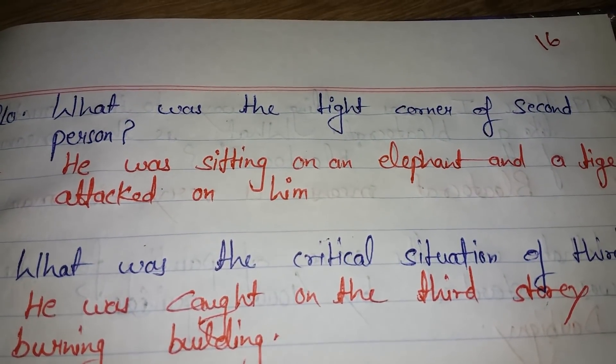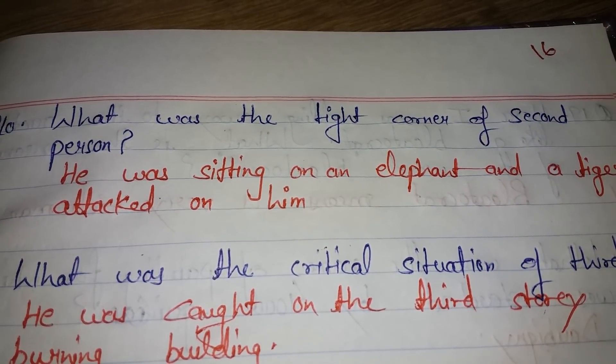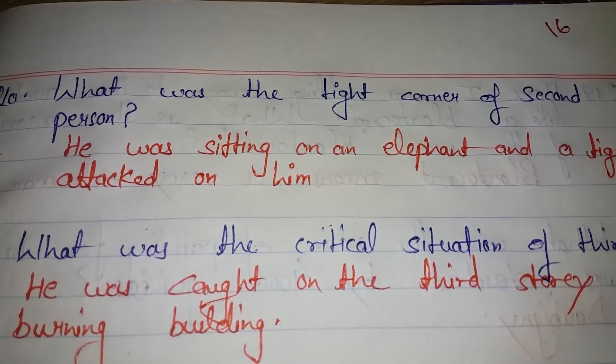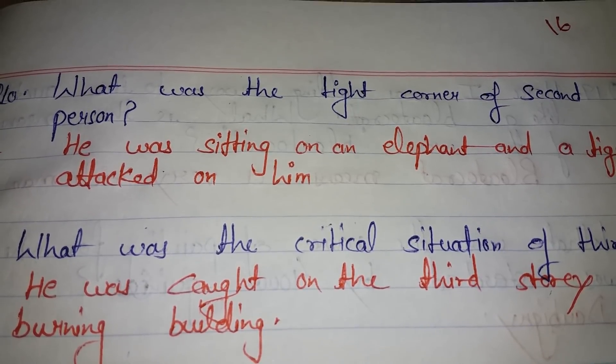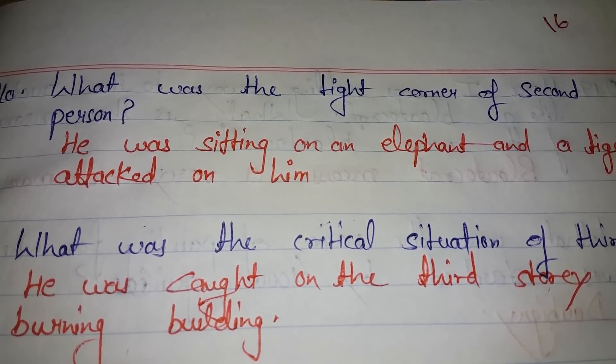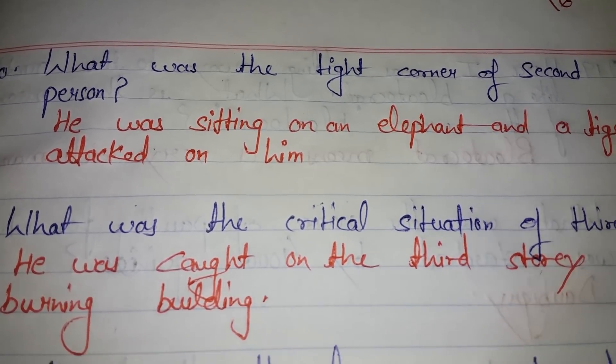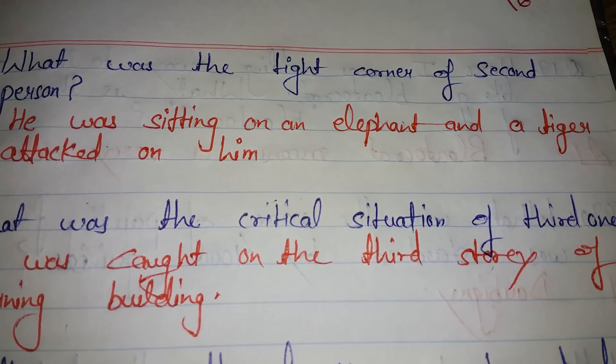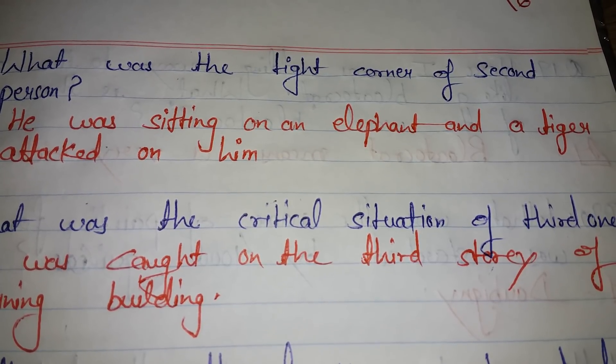What was the tight corner of the second person? He was sitting on an elephant and a tiger attacked on him.